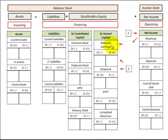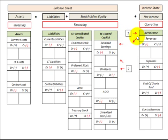We're going to look at retained earnings. It's part of stockholders' equity on the balance sheet. It's a financing activity and it's earned capital. Two things affect it: number one would be net income for the period — gain or loss flows into retained earnings — and number two, dividends paid.